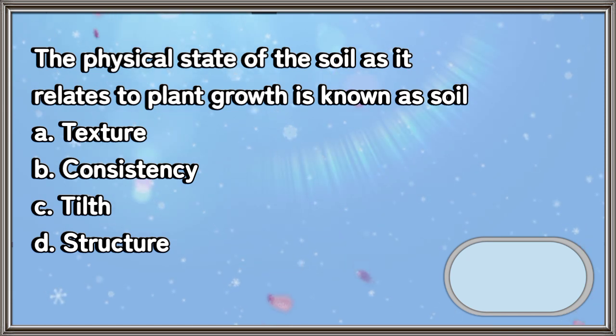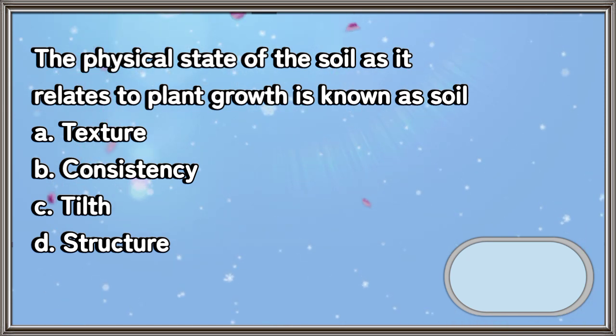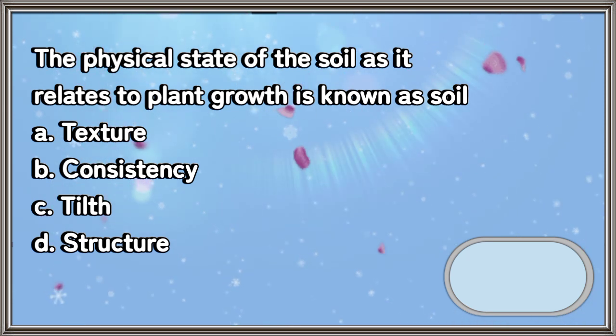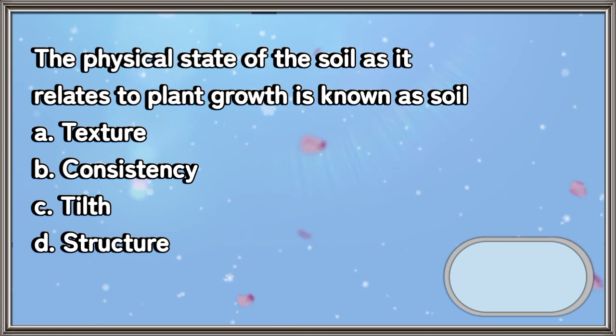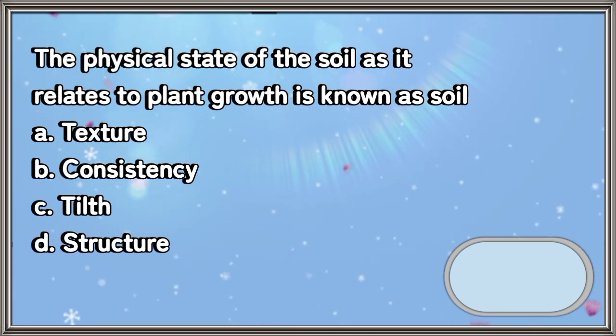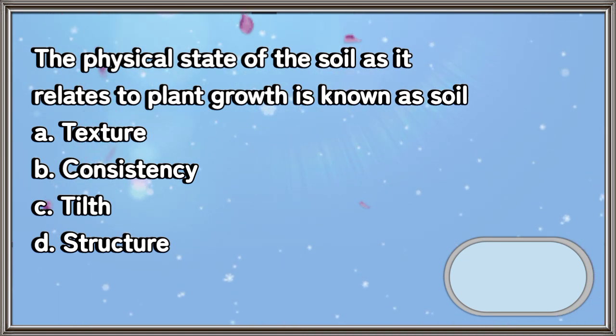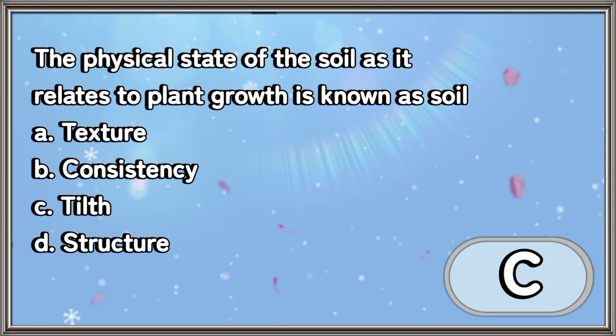The physical state of the soil as it relates to plant growth is known as soil: A. Texture, B. Consistency, C. Tilth, D. Structure. The answer is letter C.